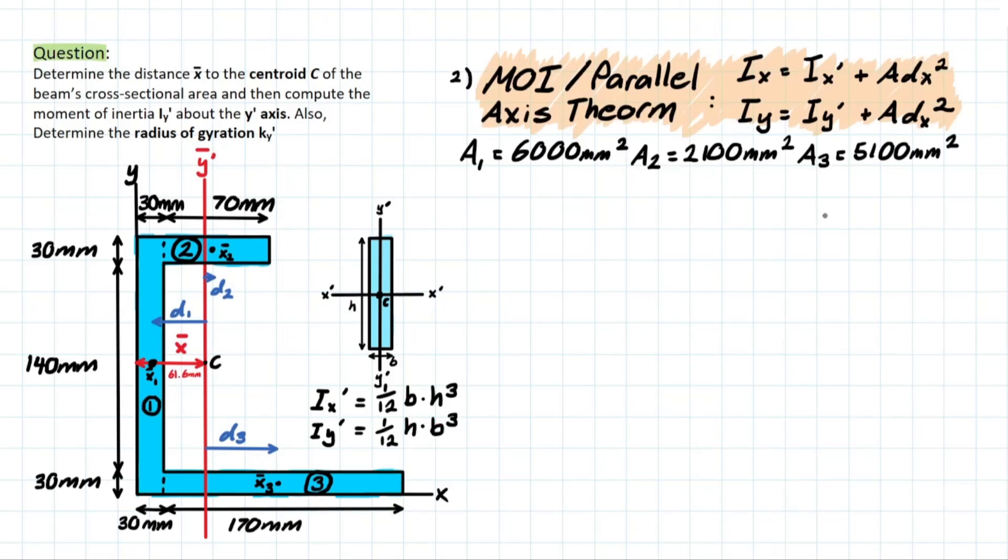So how can we start solving this problem? Well, the first thing we need to do is look back at the formula and recall what it means. So we have this DX value that we need to calculate for each of these separate shapes that make up our composite.